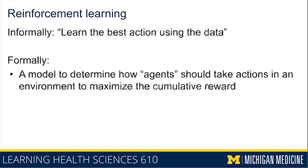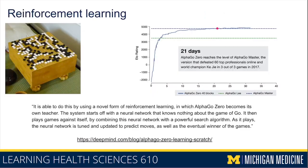The last type of machine learning is reinforcement learning, where informally you're trying to learn the best action or policy using the data. More formally, the goal of reinforcement learning is to learn a model that can determine how agents should take actions in an environment to maximize the cumulative reward. Think about a really common example: you're driving to work or you're playing a game.